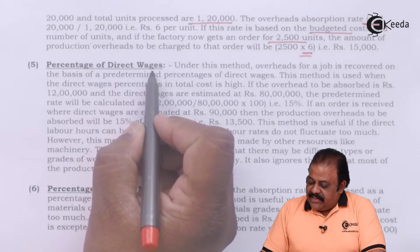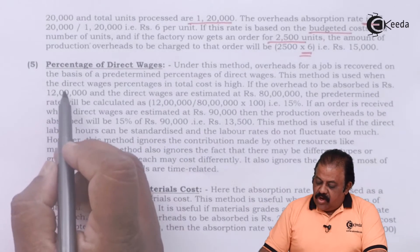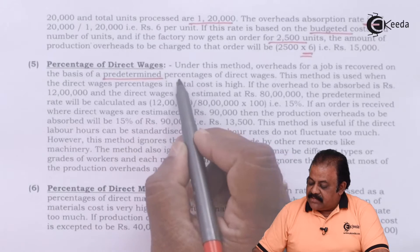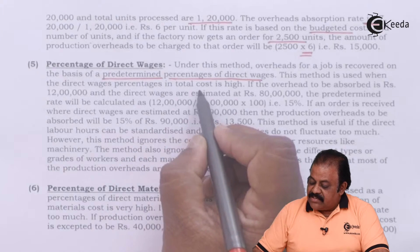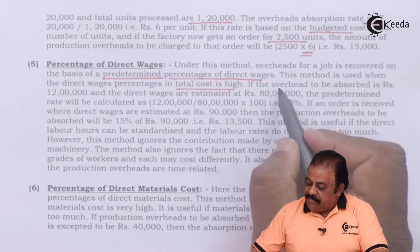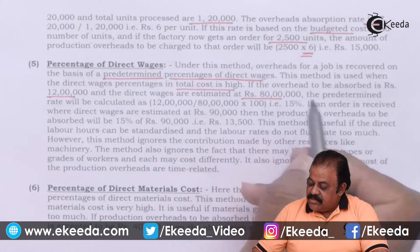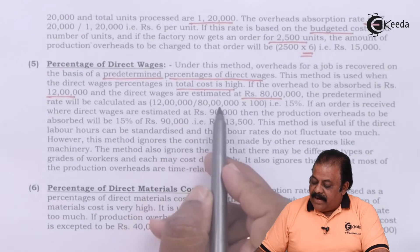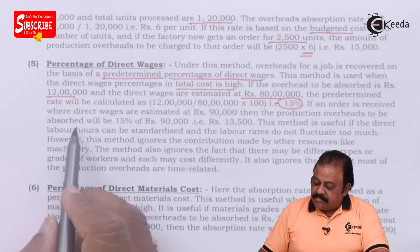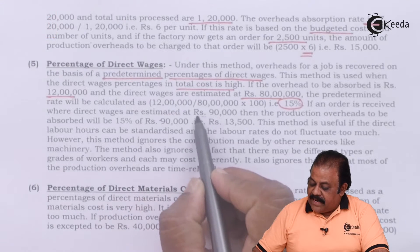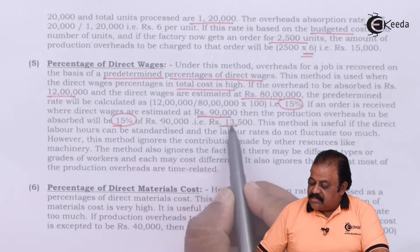Percentage of direct wages method: overheads for a job are recovered on the basis of predetermined percentages of direct wages. This method is used when the direct wage percentage in total cost is very high. If overhead to be absorbed is Rs. 12,00,000 and direct wages are estimated at Rs. 80,00,000, the predetermined rate is 12,00,000 divided by 80,00,000 multiplied by 100, which equals 15%. If an order is received where direct wages are estimated at Rs. 90,000, then production overhead to be absorbed is 15% of 90,000, that is Rs. 13,500.